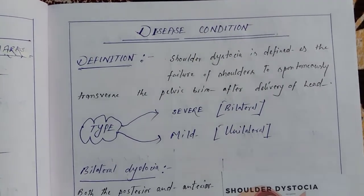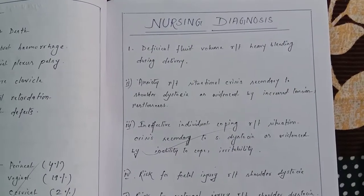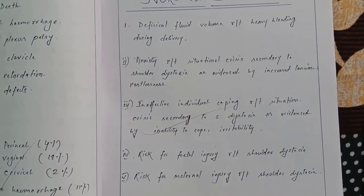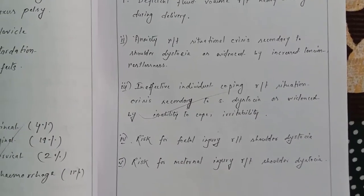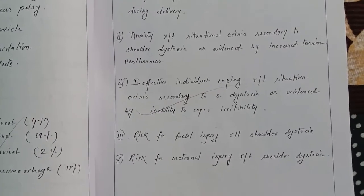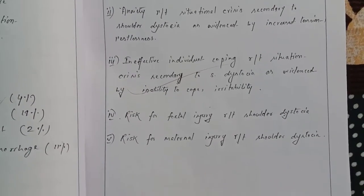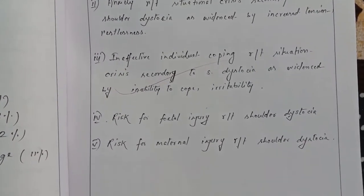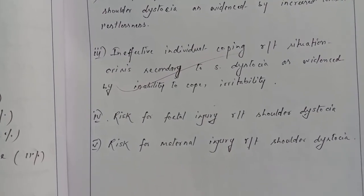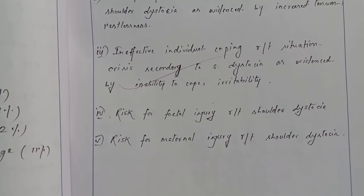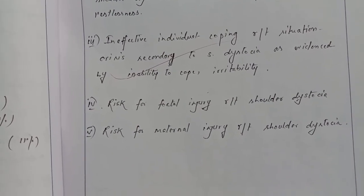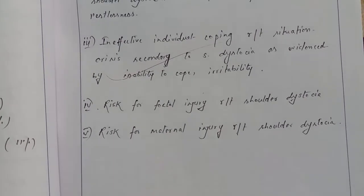Nursing diagnoses: (1) deficient fluid volume related to heavy bleeding during delivery; (2) anxiety related to situational crisis secondary to shoulder dystocia as evidenced by increased tension and restlessness; (3) ineffective individual coping related to situational crisis as evidenced by inability to cope and irritability; (4) risk for fetal injury related to shoulder dystocia; (5) risk for maternal injury related to shoulder dystocia.